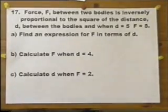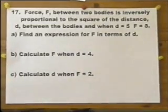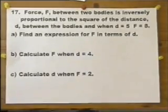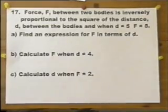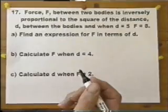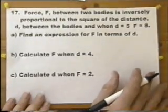Question 17. Force F between two bodies is inversely proportional to the square of the distance between the bodies. When D equals 5, F equals 8. Find an expression for F in terms of D.